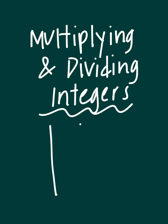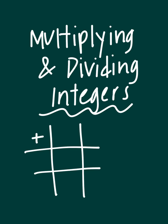The first is a tic-tac-toe board. You put positive signs going diagonal and negative signs everywhere else. So, negative times a negative gives you positive. A positive times a negative gives you negative.